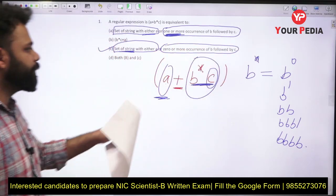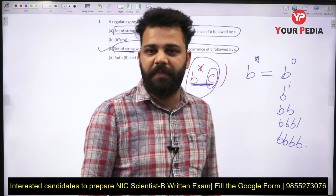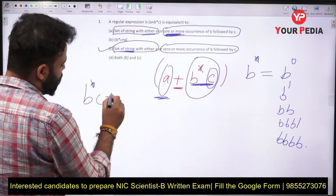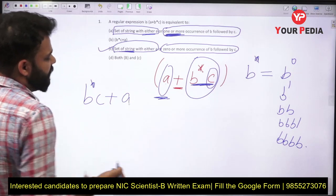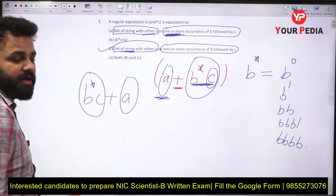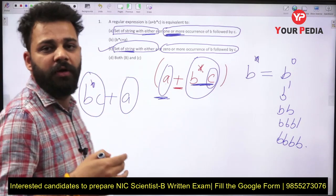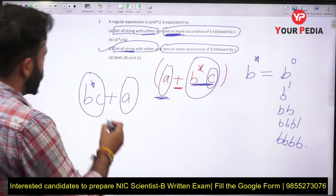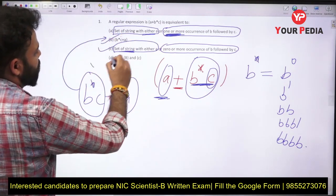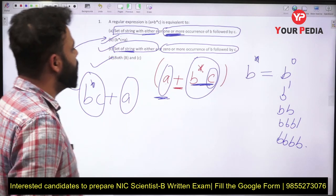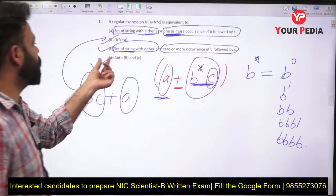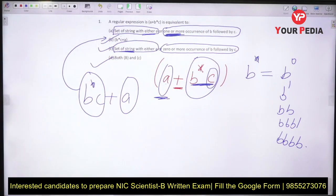Looking at A+B*C, you can also write it another way — you can take this part or that part, and it will mean the same thing. So this regular expression can be written in that way also. Therefore the correct option is both option B and option C, meaning the correct answer is option D.